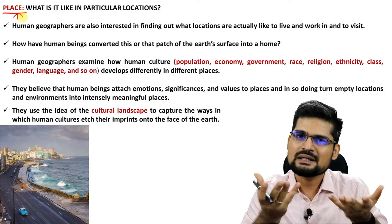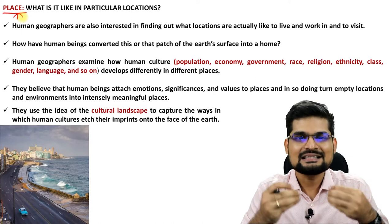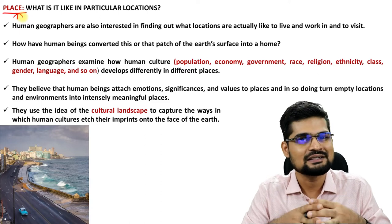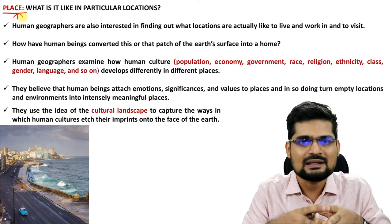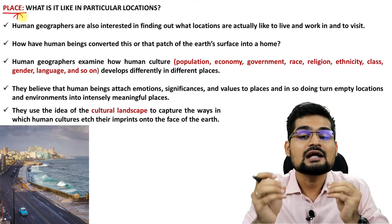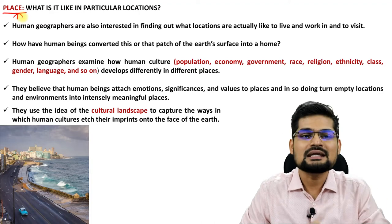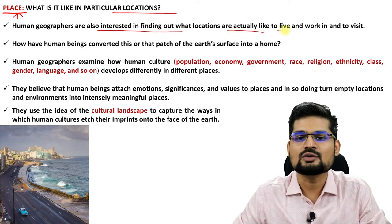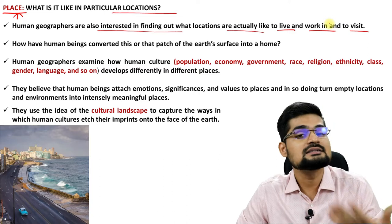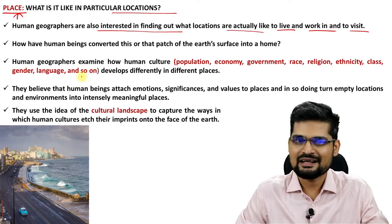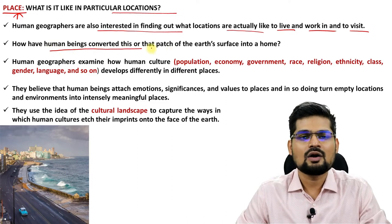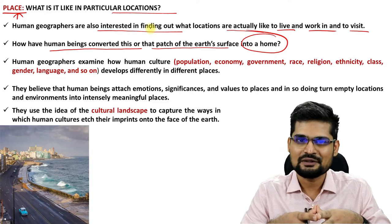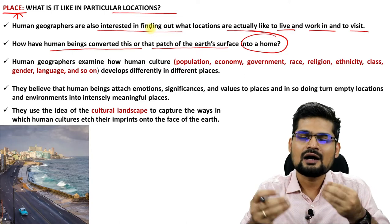Spaces also change, but they change in geological time — as we have studied in continental drift and plate tectonics. For human beings, latitude and longitude don't change in a human lifetime. What changes are the attributes we give to those places. Place-making is important in particular locations. Human geographers are interested in finding out what locations are actually like to live, work or visit. How have human beings converted a patch of earth into a home? Through civilizations, through river valley civilizations — and now we are creating urban places and carving our own niche everywhere we go. That's what place-making is.